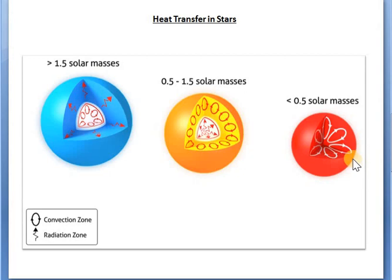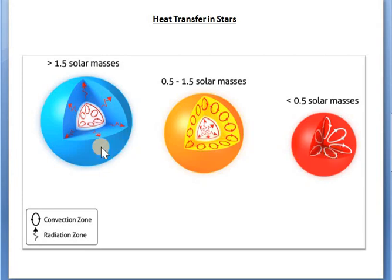Also note that the lowest mass main sequence stars have no radiation zone at all — the dominant energy transport mechanism throughout the star is convection.